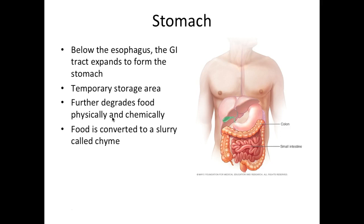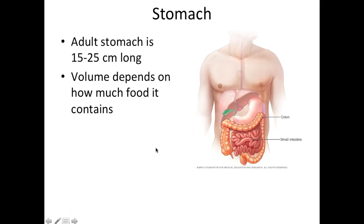When food is combined with gastric juices and acids, it forms a slurry called chyme, and the chyme is very acidic. The size of the stomach varies — it can be anywhere between 15 to 25 centimeters long, and the volume depends on how much food is in it. It's not very large when you wake up in the morning, but as you start eating it will expand. The stomach also moves around and churns constantly.